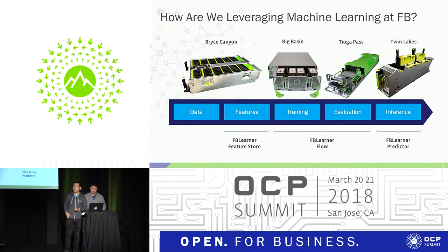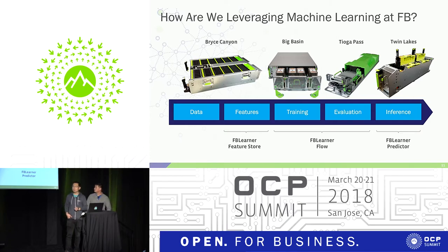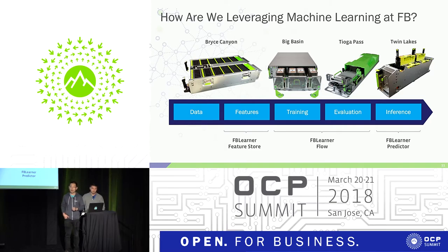Let's take a deeper dive into how FB Learner works at Facebook for machine learning. The training data — which includes user interactions like likes, posts, comments, photos, and stories — is first stored in our data storage. Our FB Learner Feature Store then generates features based on that data and feeds it into FB Learner Flow.